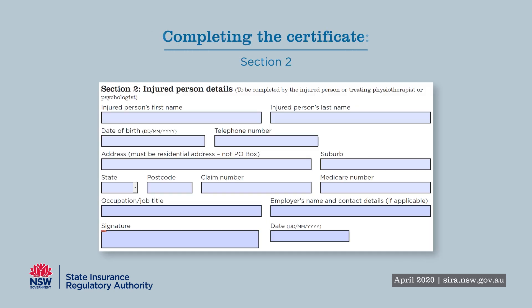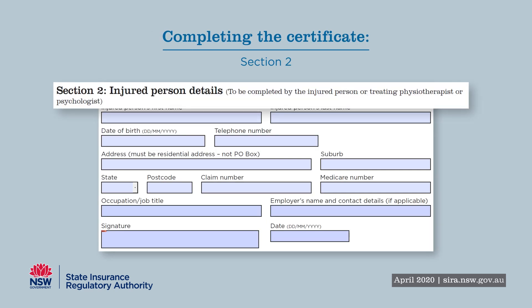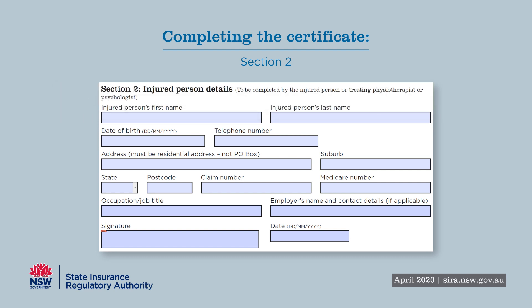In Section 2, you or the injured person record the injured person's personal details before the injured person provides their consent to the Certificate of Capacity / Certificate of Fitness section of the form.